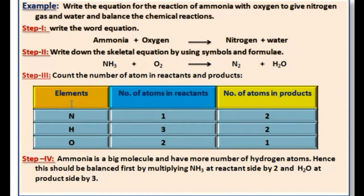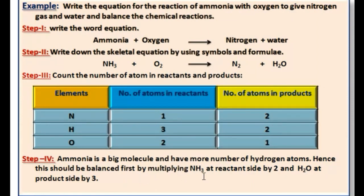Now draw a tabulation form with columns for: element, number of atoms in reactant side, and number of atoms in product side. N2 is a diatomic molecule. Ammonia (NH3) has more hydrogen atoms, so the hydrogen atoms are not balanced. Hence this equation should be balanced first by multiplying NH3 on the reactant side by 2 and H2O on the product side by 3.